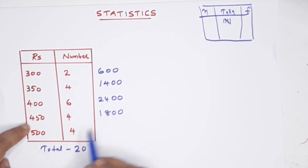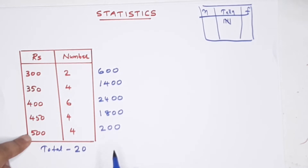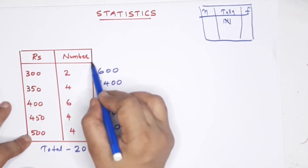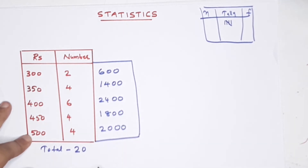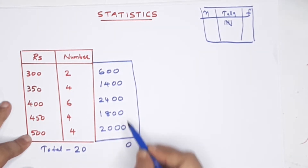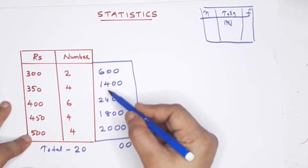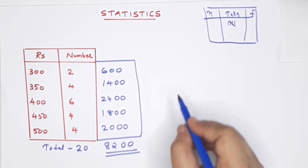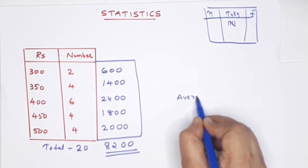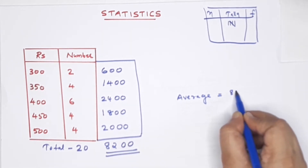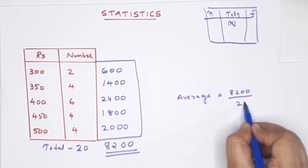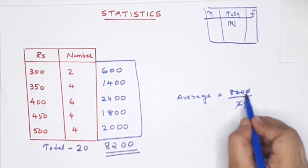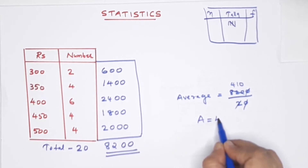Then we add 1,000 and 800. We add 2,000. Let's add everything: 0, 8, 12, then 2, then 8. The average equals 8,200 divided by total number 20. That gives us 410. The average is 410.